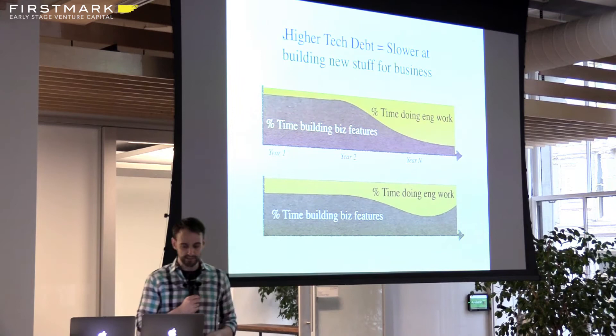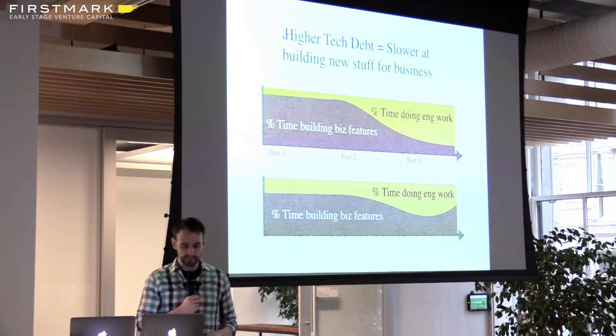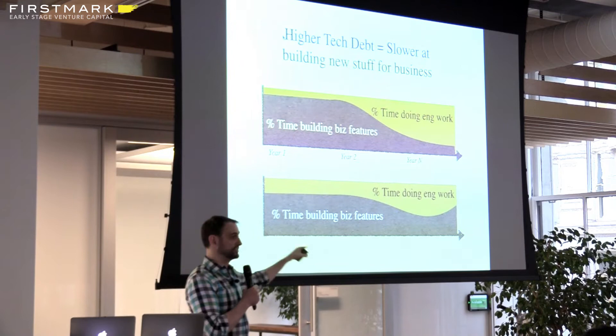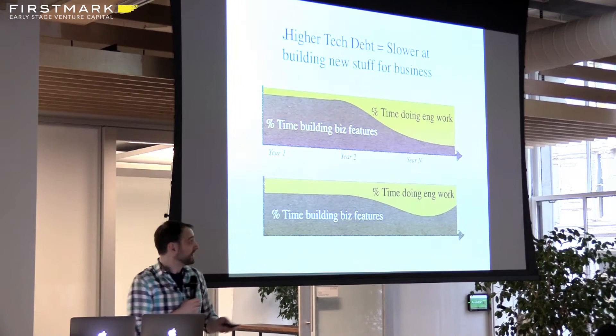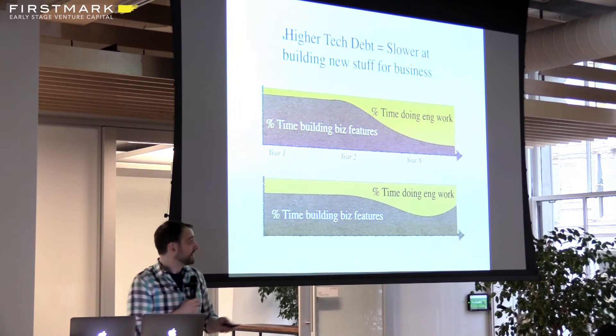You'll note there may be dips in this graph that normally happen as part of your business model. Etsy, for example, has a code slush in Q4 where they're not shipping new business features during that period. But what you want to avoid is seeing the graph really slide downward in a way that's not planned.